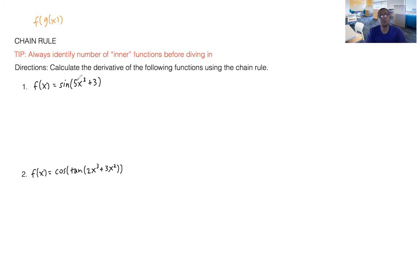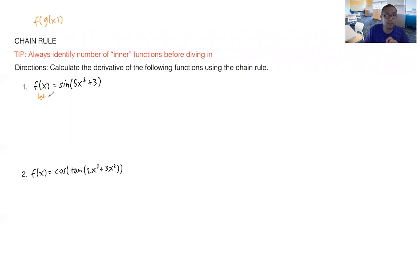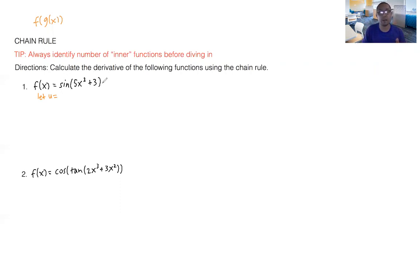In this first example, we have f of x equals sine of 5x squared plus 3. To simplify when we do the chain rule, I'm going to use variables. I'm going to start defining the inside functions. I'm going to say let u equal just the stuff on the inside — 5x squared plus 3 is the stuff on the inside collectively. On the outside, you have the sine of that stuff. So let u equal 5x squared plus 3.